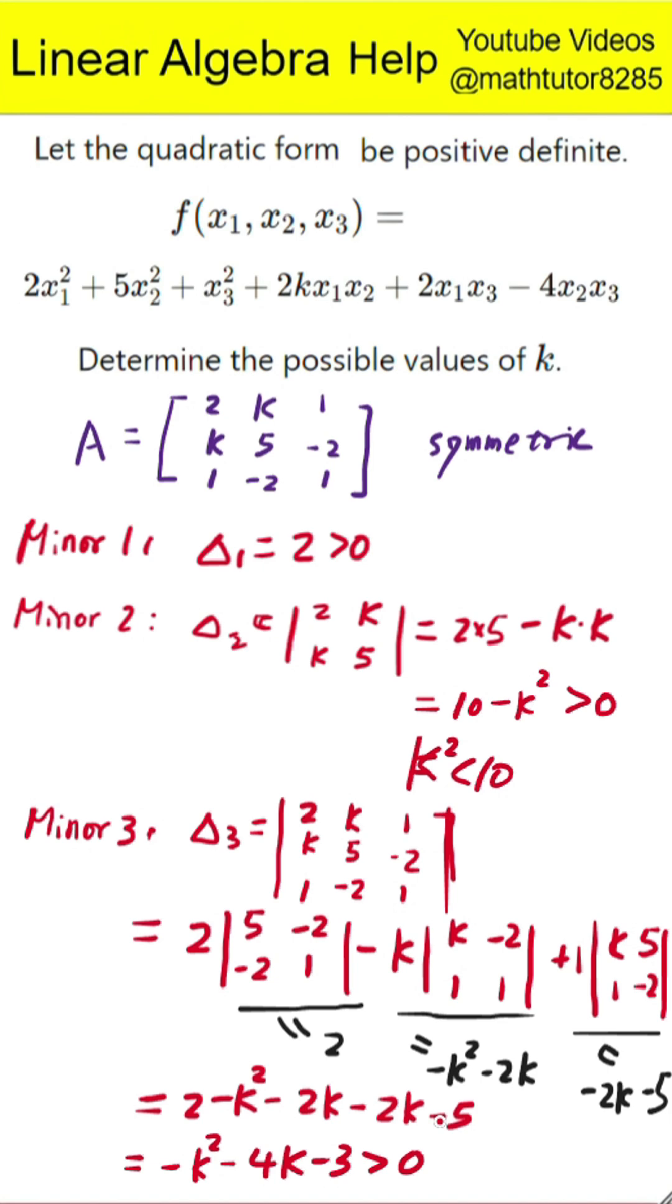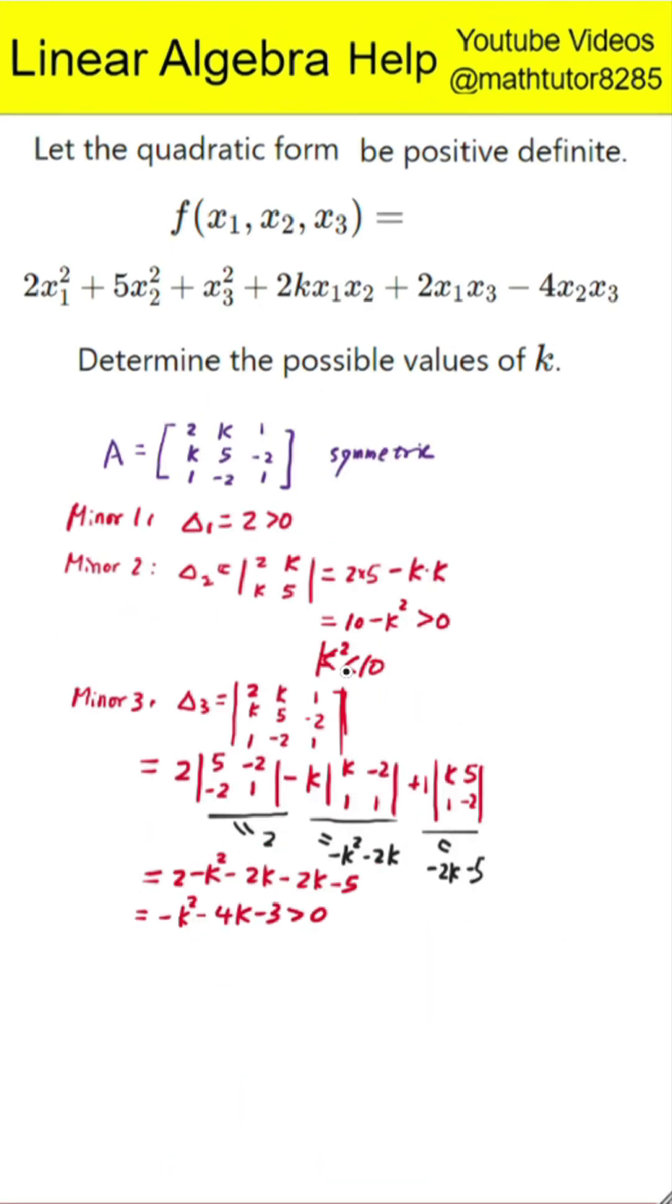We now require this entire expression to be greater than 0. So negative k squared minus 4k minus 3 must be positive. That's the same as k squared plus 4k plus...